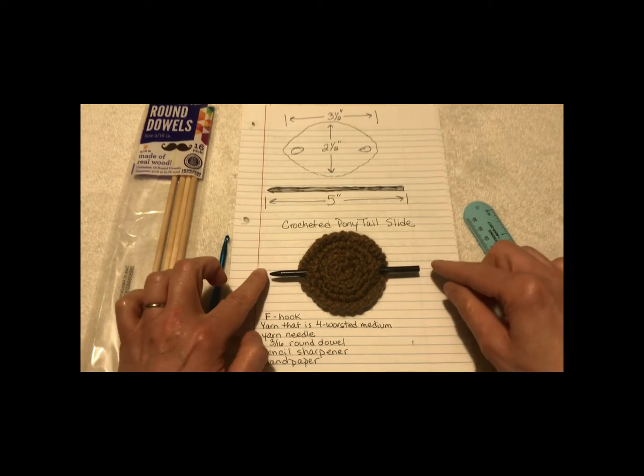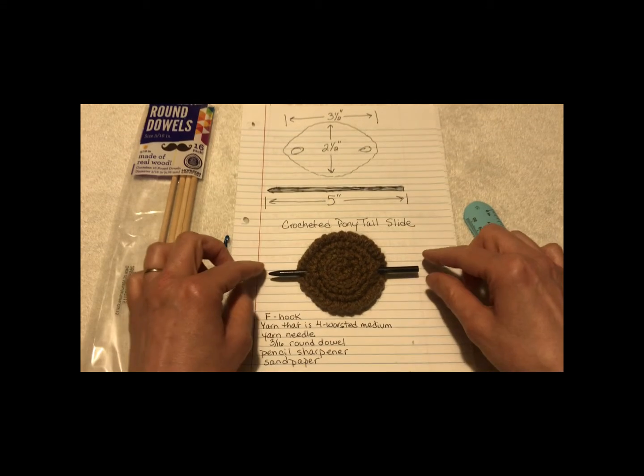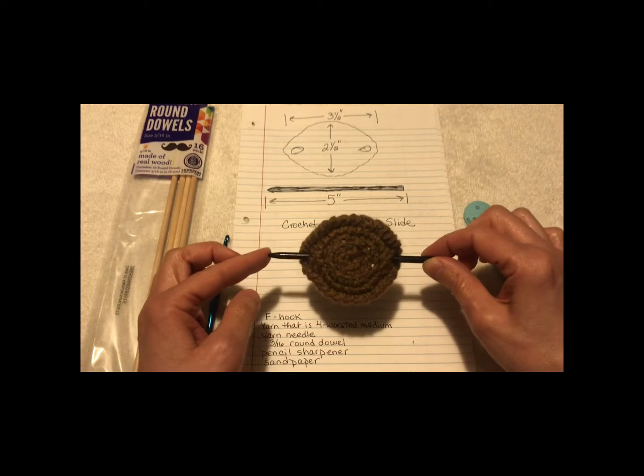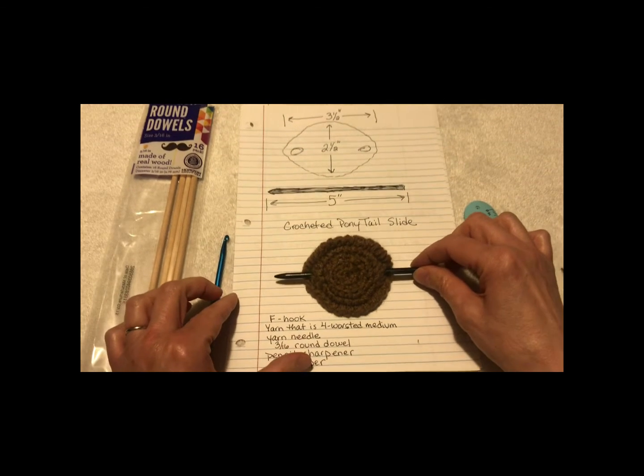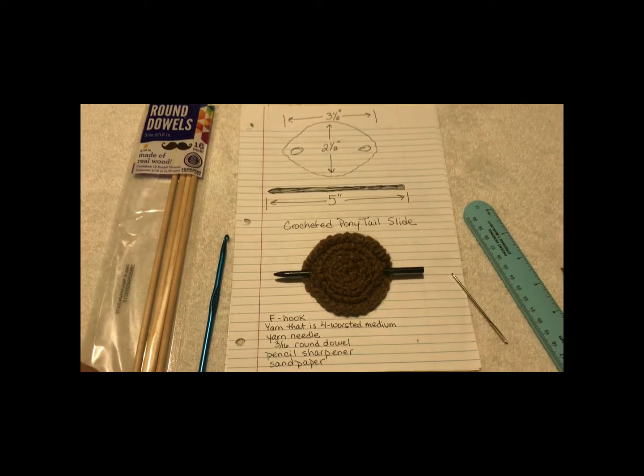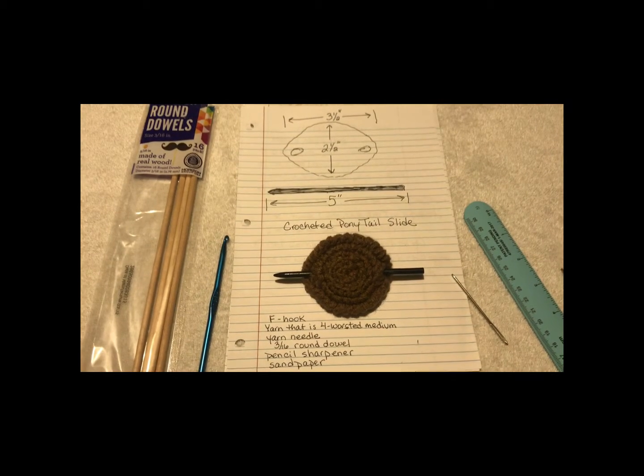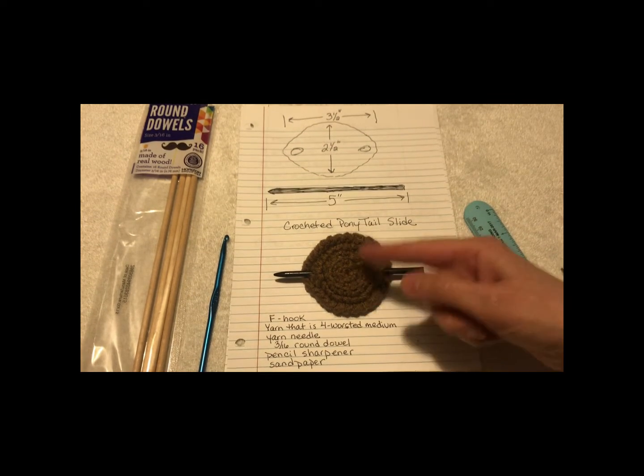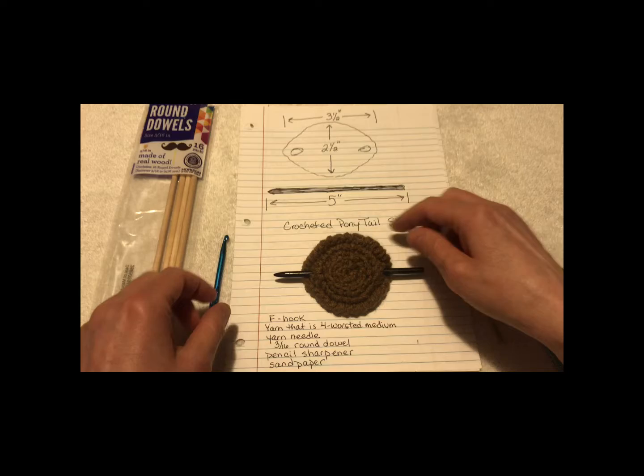A pencil sharpener to sharpen the edge, and then sandpaper, or you can use a nail file to round the end so it's not a sharp point. And then you can either leave it plain, or you can just color it with paint or a stain. And that's totally up to you. And you can use any color of yarn that you want for this project.